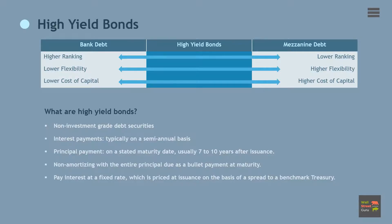High yield bonds are non-investment grade debt securities that obligate the issuer to make interest payments to bondholders at regularly defined intervals, typically on a semi-annual basis, and repay principal at a stated maturity date, usually 7 to 10 years after issuance. As opposed to term loans, high yield bonds are non-amortizing, with the entire principal due as a bullet payment at maturity. High yield bonds typically pay interest at a fixed rate, which is priced at issuance on the basis of a spread to a benchmark treasury.